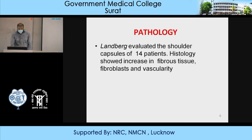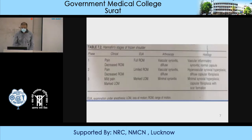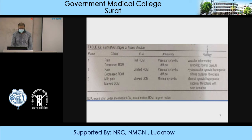Regarding pathology, Lundberg evaluated the shoulder capsule of 14 patients. Histology showed increase in fibrous tissue, fibroblasts, and vascularity. There are mainly three stages of frozen shoulder according to Haenfin. Phase 1: pain with decreased range of movement. Phase 2: decreased range of movement. Phase 3: mild pain and markedly lower range of movement. Arthroscopically in phase 1, there will be diffuse vascular synovitis; in phases 2 and 3, minimal synovitis.